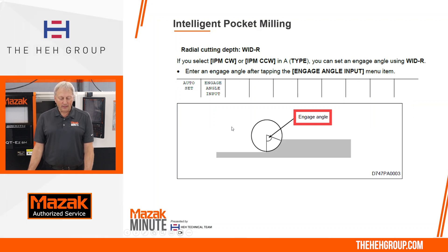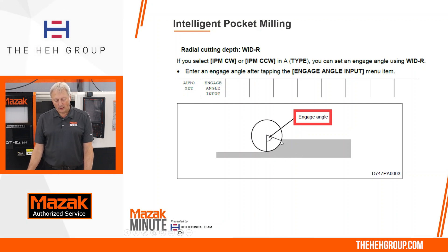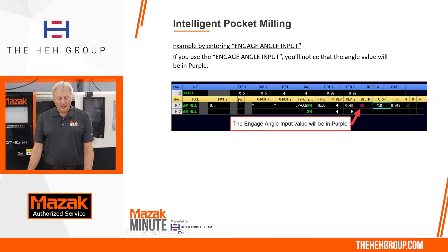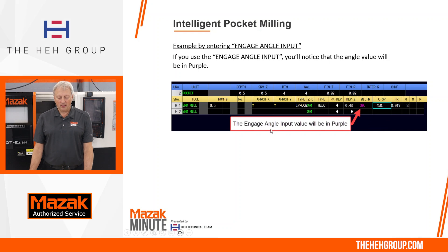The other choice is engage angle input — I wanted to discuss it so you understand what it is. It defines the angle of engagement for how much you want. Not many tool vendors tell me the percentage they want, so I prefer to type in the actual value myself. But if you use the angle input soft key and type in a value — for example 30 degrees — you'll notice that the width R shows in purple, indicating it's an engaged angle rather than a direct radial value.